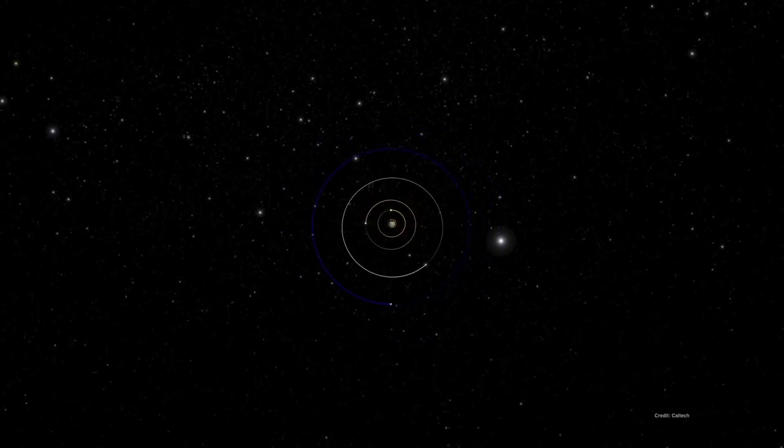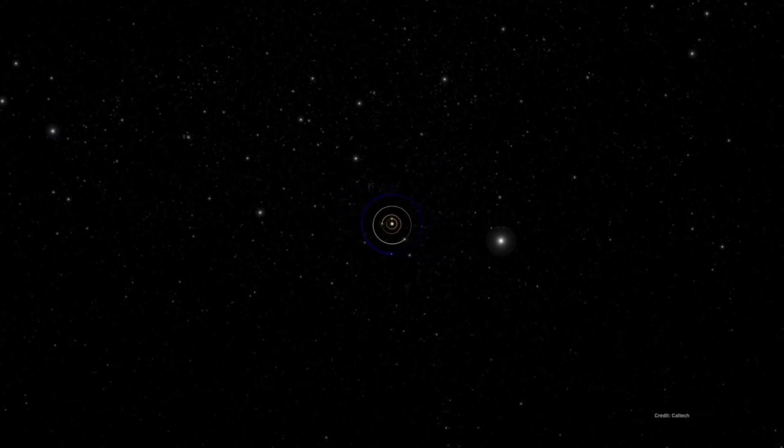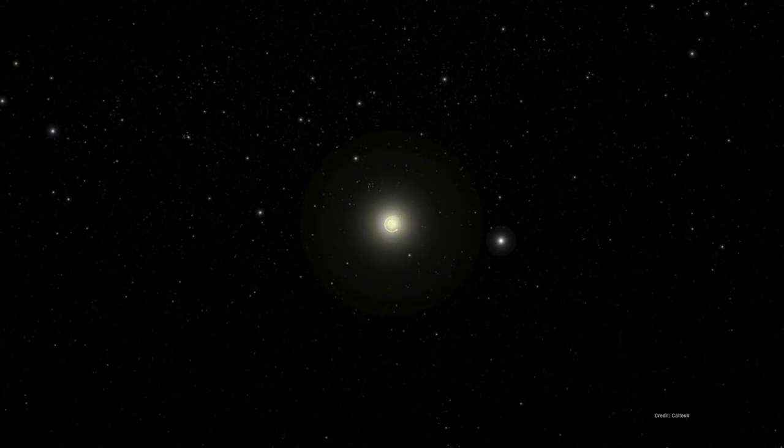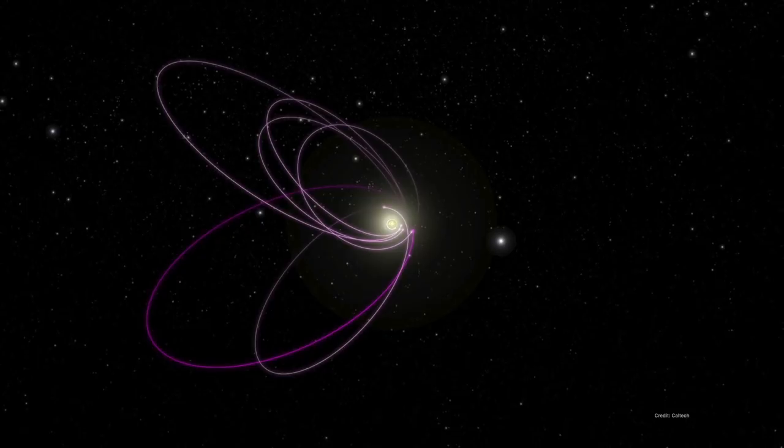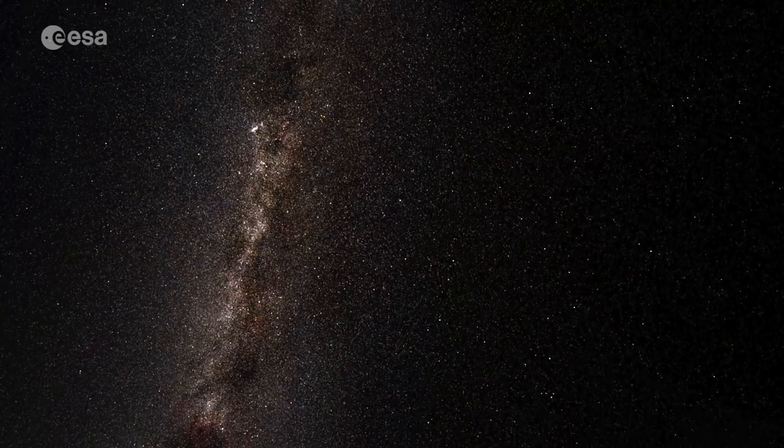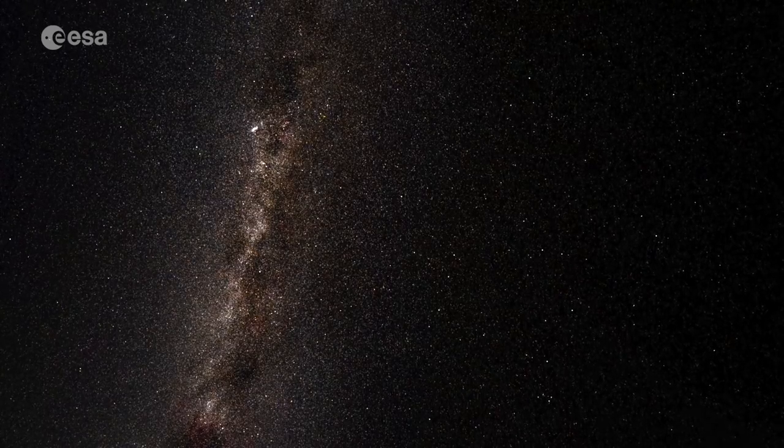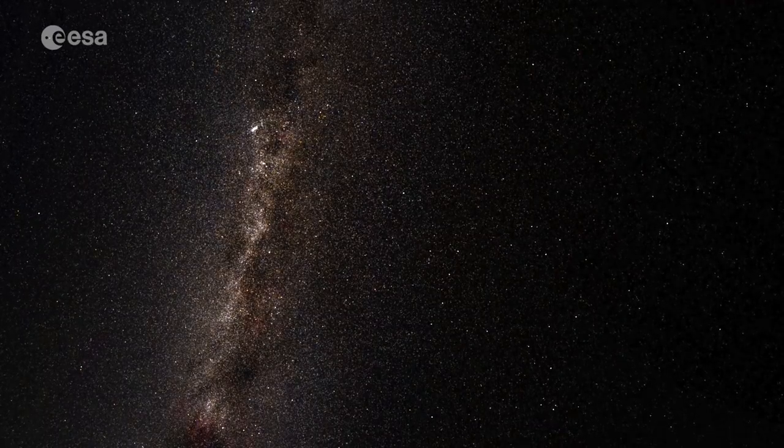Comets, Kuiper Belt objects, and maybe even unseen planets are moving undetected in their orbits around the sun. Stars move in their orbits around the center of our home galaxy, slowly changing their positions in the sky.